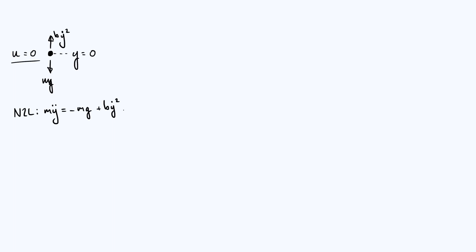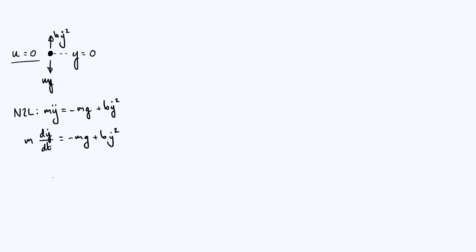This is a non-linear differential equation, so we want to integrate it twice. We first treat it as a first order differential equation for ẏ, and then integrate ẏ later to find y. It's helpful to write the left-hand side as m·dẏ/dt — just writing one of the dots on y as an explicit time derivative. The right-hand side is minus mg plus b·ẏ². The equation is separable, so we can get the ẏ terms on one side and the t terms on the other.